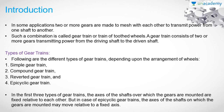In some applications, you can see two or more gears made to mesh with each other to transmit the power from one shaft to another shaft. Such a combination is called a gear train or train of tooth wheels. A gear train consists of two or more gears transmitting power from the driving shaft to the driven shaft, where the driving shaft is where motion starts and the driven shaft follows. We have four types: simple gear train, compound gear train, reverted gear train, and epicyclic gear train. The first three types transmit motion between shafts whose axes are fixed relative to each other.